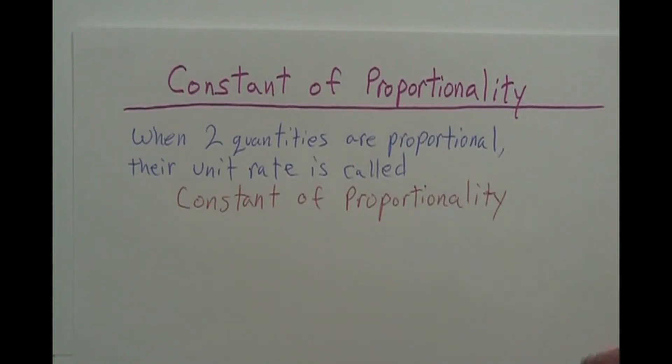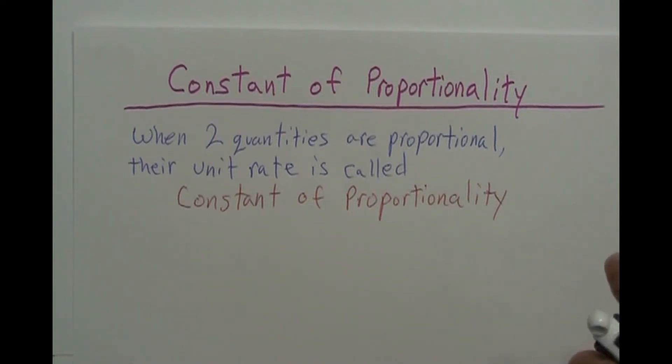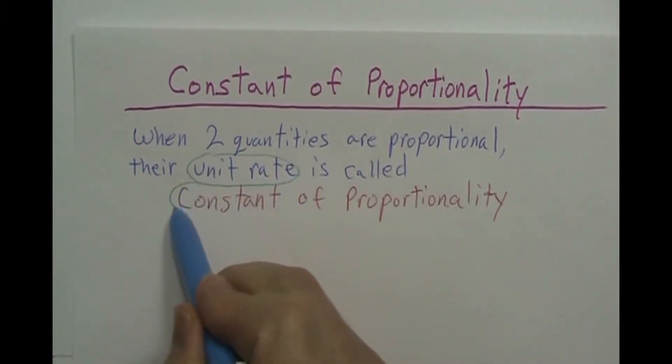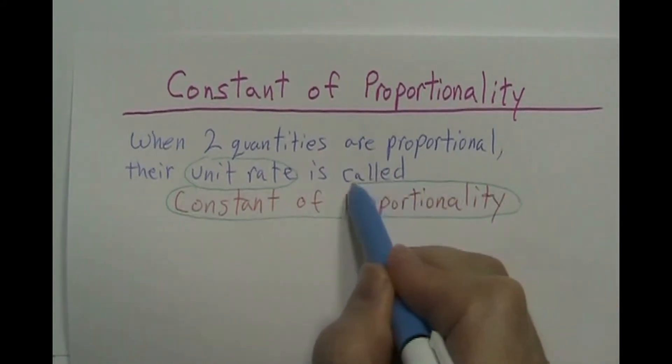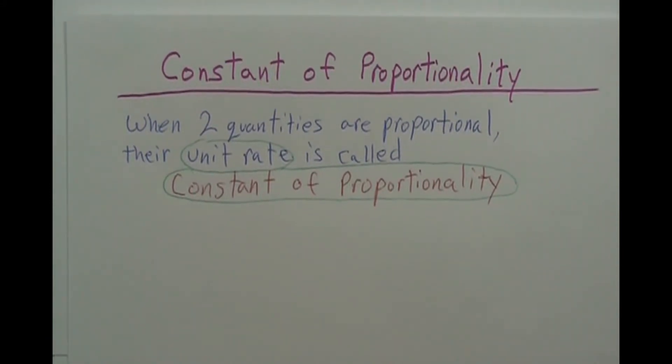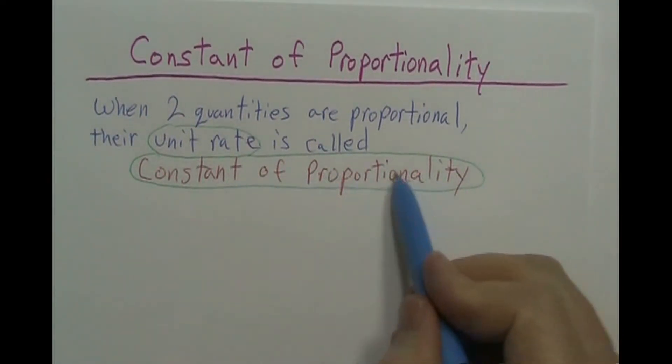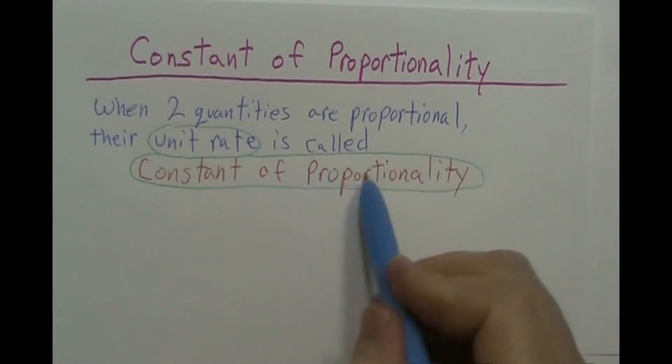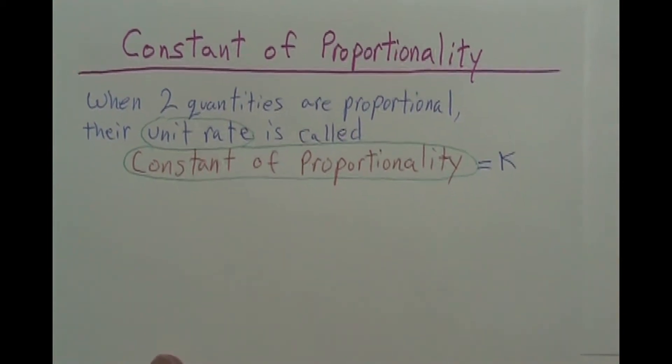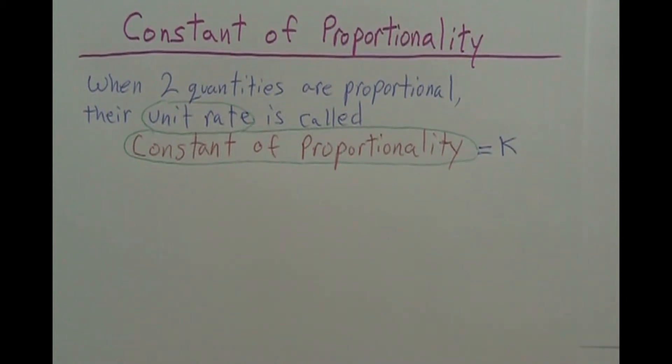All right and so basically they're the same, mean the same thing, or they come out the same value rather. So unit rate and constant of proportionality are the same value, it's the same number when they're proportional. One other thing is that sometimes they give this a variable for constant proportionality and they'll give it the variable k. I don't know why they chose that but they do.